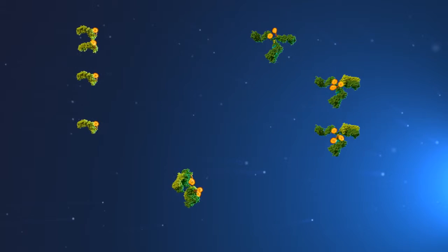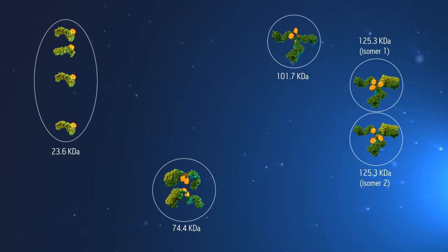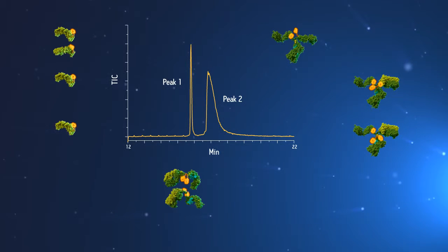Here we see that the positional isomers with a drug load of four can produce five possible structures. Only two of the possible structures are observed in the reversed-phase analysis of this peak.